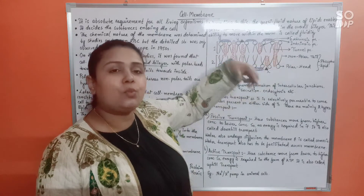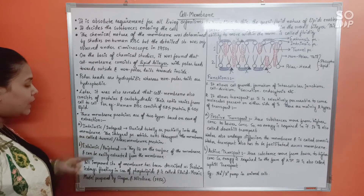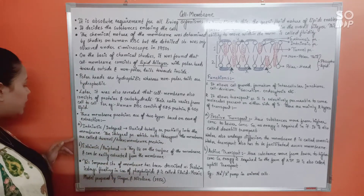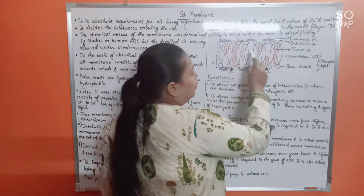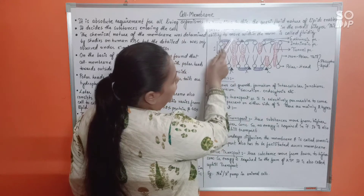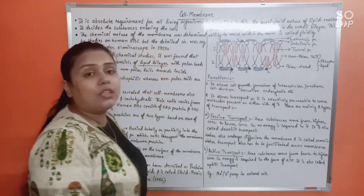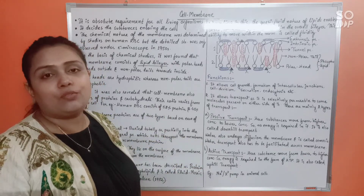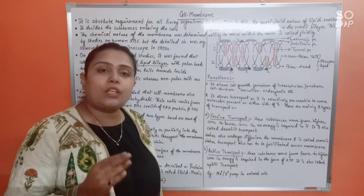Intrinsic or integral proteins are buried totally or partially into the membrane. The integral proteins that run throughout the entire membrane are called tunnel or transmembrane proteins. These proteins form tunnels or channels within the plasma membrane, allowing water transport to occur across the membrane.